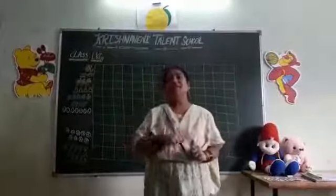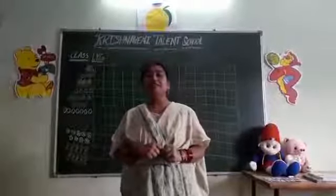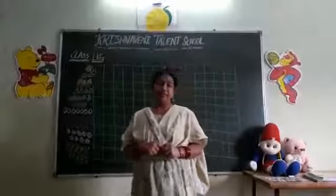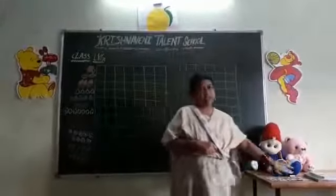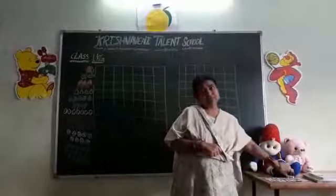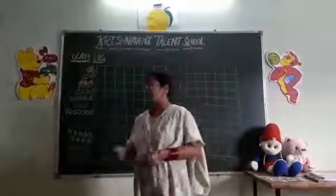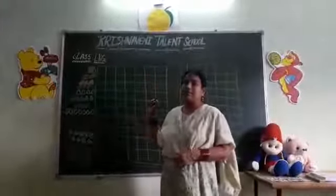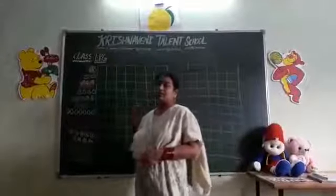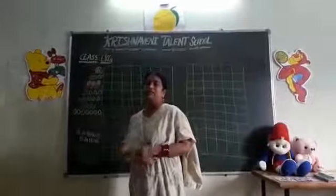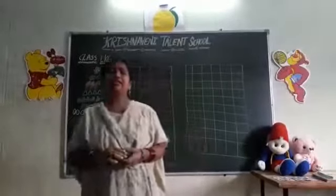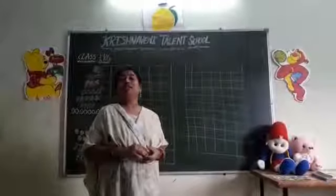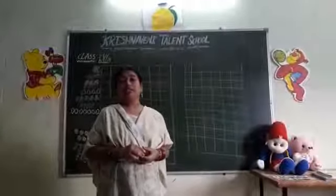So today we have a rhyme. What did we learn? Which rhyme did we learn? Number rhymes. So today we start our class with the numbers. We will learn today about the numbers: 1, 2, 3, 4, 5, 6, 7, 8, 9, 10. These numbers today we will be learning.